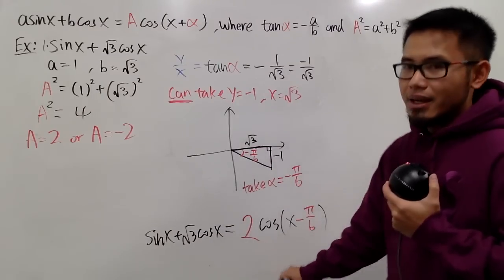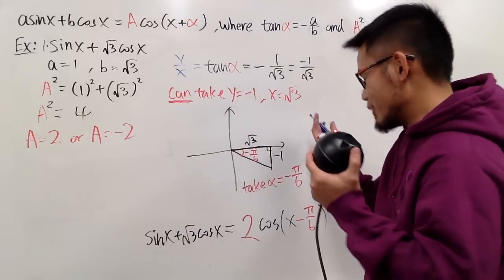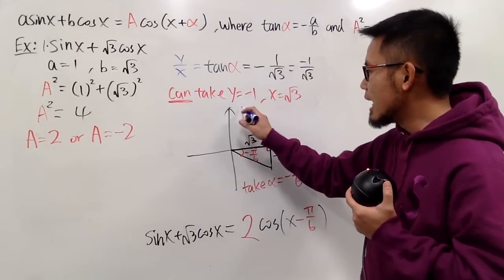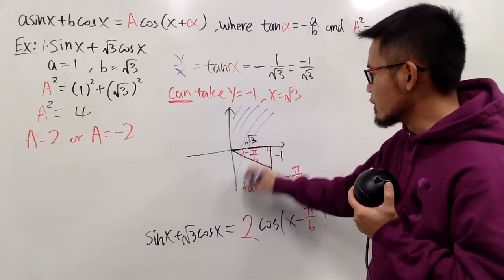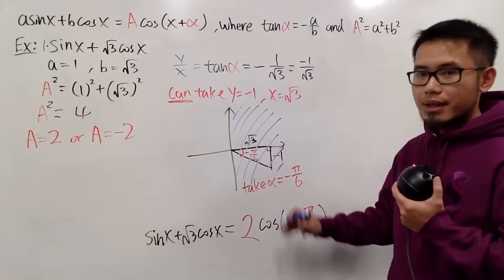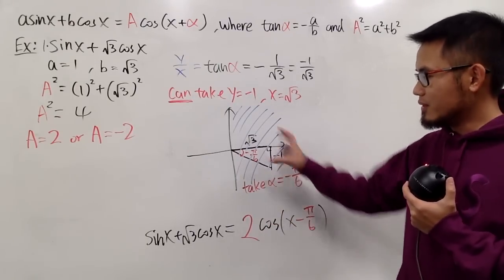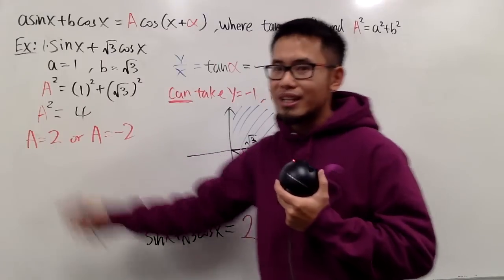Why? The reason is, whenever you draw a picture, if the triangle ends up on the first and the fourth quadrant like this, you use the positive A. Because that's what the inverse tangent will give you, and you use the positive A value for that.